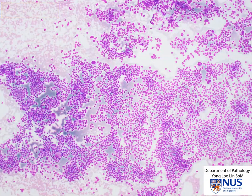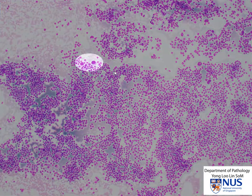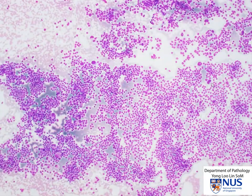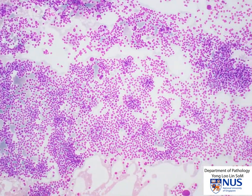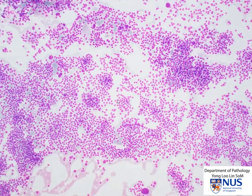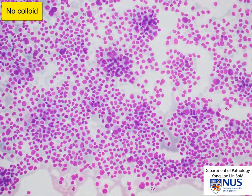At this magnification, we can also see the occasional very large cell and also binucleated cells. The other interesting thing about this smear is that there is no colloid in the background. Again, we have binucleated cells.